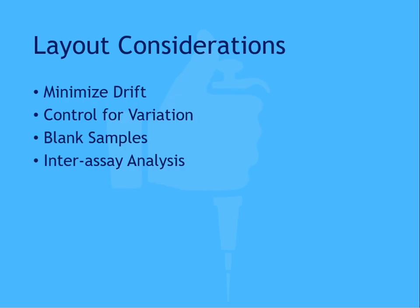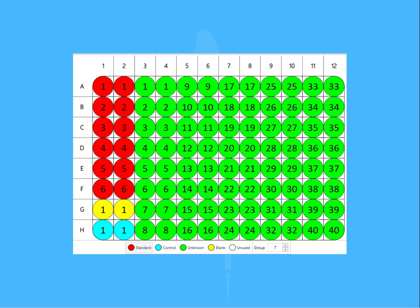When considering sample locations for inter-assay analysis, often these samples are contained in the same wells for each assay run. For example, if your control samples are housed in wells H1 and H2, typically the plate layout will remain the same for all subsequent assays, ensuring you're comparing the control samples in the same conditions for each run. However, there may be instances where you would like to assess how a different plate location can impact results, so the best layout will depend on the desired observations for the specific application.